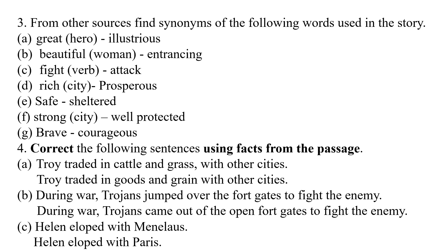Now correct the following sentences using the facts from the passage. First: 'Troy traded in cattle and grass with the other city' — Wrong. Correct sentence: Troy traded in goods and grain with other cities. Second: 'During war, Trojans jumped over the fort gates to fight the enemy' — Wrong. Correct: During war, Trojans came out of the open fort gates to fight the enemies. Third: 'Helen eloped with Menelaus' — No. Correct: Helen eloped with Paris.